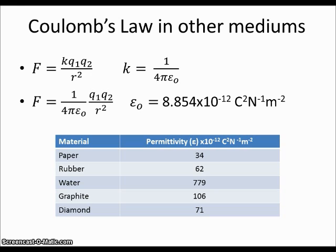Instead of saying that k is equal to Coulomb's constant, you'll say that k is equal to 1 over 4 pi epsilon not, where epsilon not is the permittivity of free space.